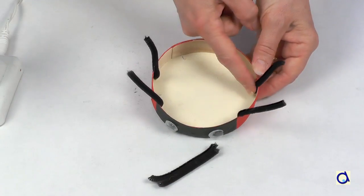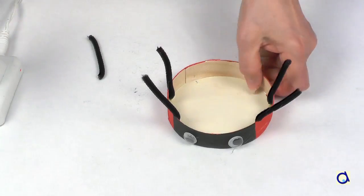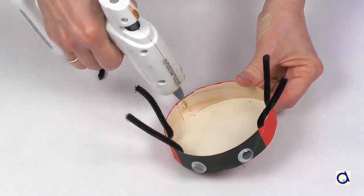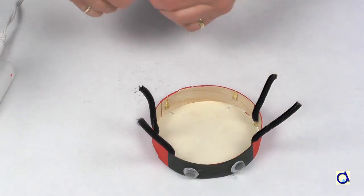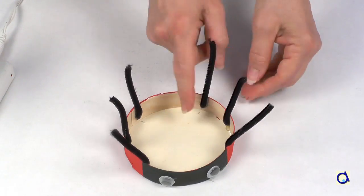Take six pieces of pipe cleaner and glue three on each side of the body with a glue gun. These pieces of pipe cleaner form the legs of the ladybug. The ladybug is an insect and it has six legs.